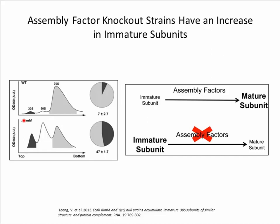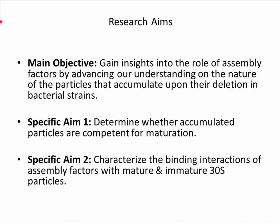To circumvent this problem, recent studies have focused on knocking out identified assembly factors with the hope of stalling maturation and increasing the amount of immature subunits found in the cell. Analysis of ribosome profiles in E. coli strains with the assembly factor RIMM knocked out revealed an increase in free 30S and 50S subunits and a decrease in 70S ribosomes. This gave us a tool to investigate the assembly process in vivo by providing a source of immature subunits that could be harvested for further investigation. The main objective was to gain insights into the role of assembly factors by advancing our understanding of the particles that accumulate upon their deletion.